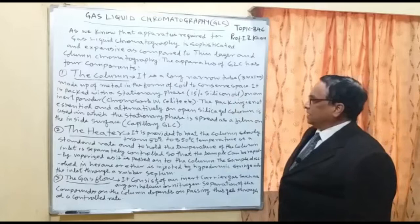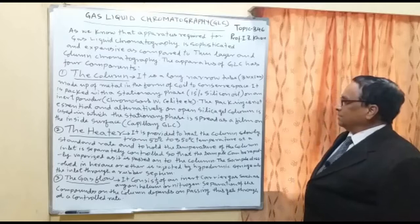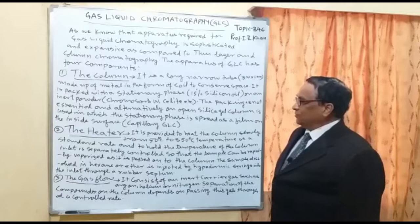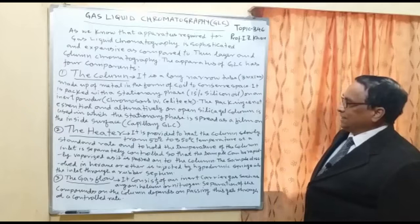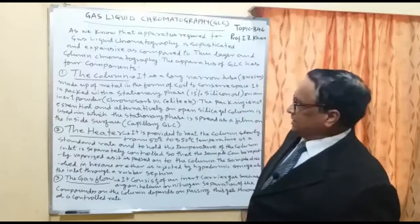The inert powder packing material is known as Chromosorb or Celite. Packing is not always essential; alternatively, an open capillary column is used in which the stationary phase is spread as a thin film coating on the inside surface of the capillary tube.